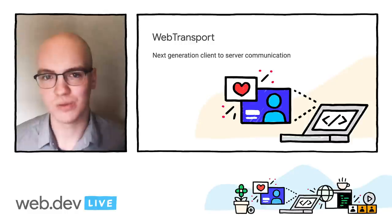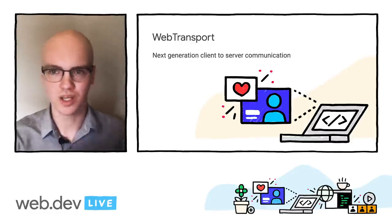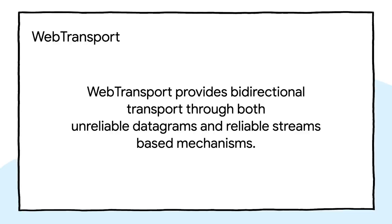The next API I want to get into is WebTransport, which is a next-generation networking API for client-to-server communication. WebTransport provides bi-directional transport through both unreliable datagrams and reliable streams-based mechanisms. Bi-directional means that it enables easy two-way communication. With something like HTTP, the connection has to be initiated by the client and you have to send all requests at once and then wait for a response. With WebTransport, you don't have these limitations, so you can enable a much more interactive session.